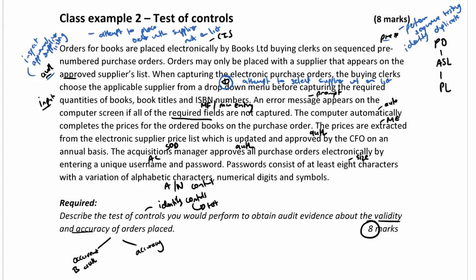The system requires capture of book titles and ISBN numbers. Since ISBN numbers would be alphanumeric, we can attempt to capture an entry using only letters where numbers are required — and we should not be allowed to. We then want to inspect that a prompt actually appears when we don't capture all required fields, so first we omit a field and then inspect the prompt.